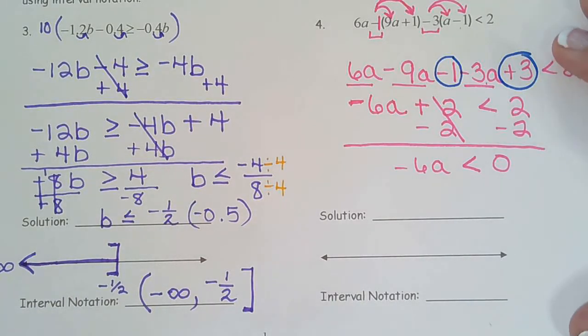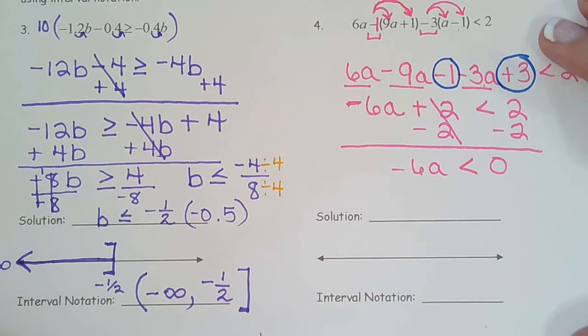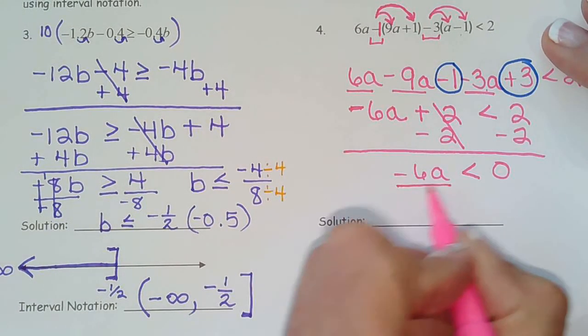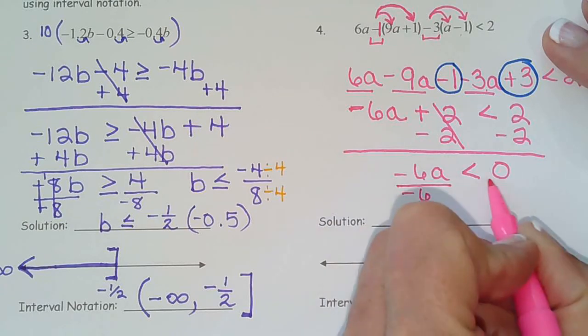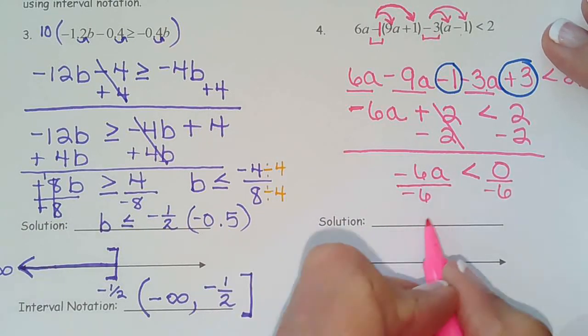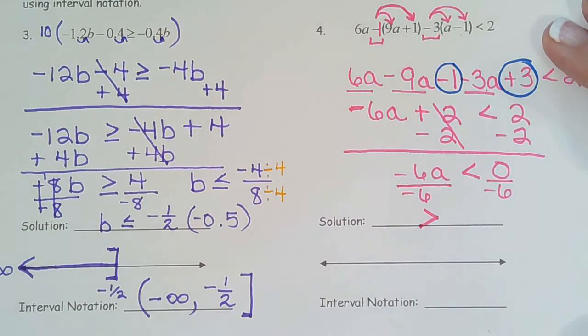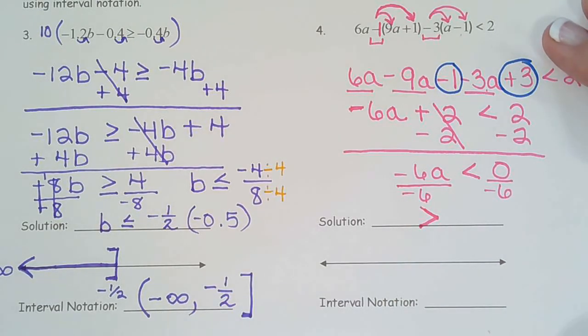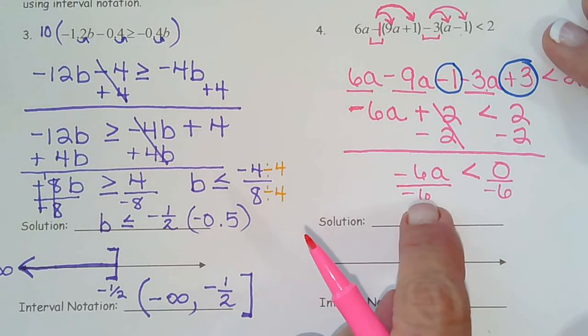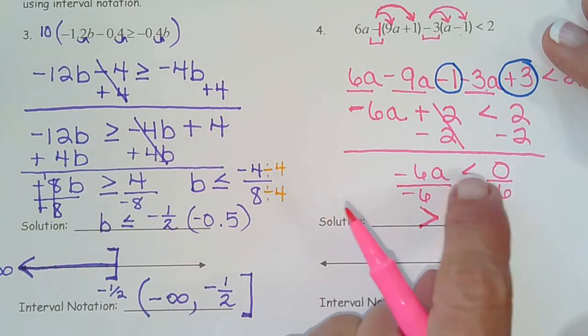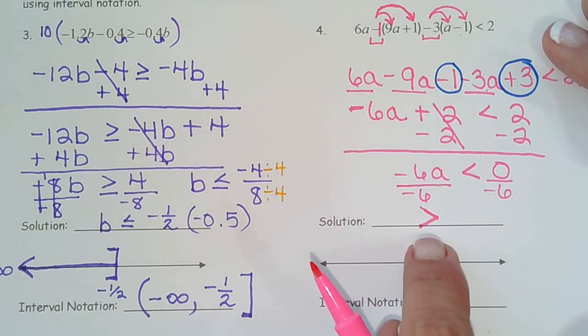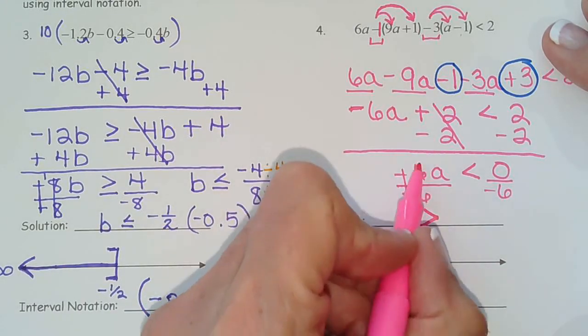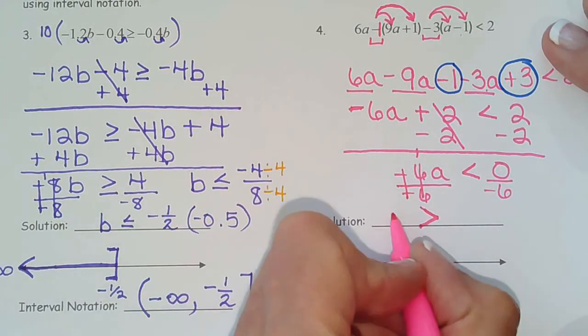And last but not least, we're dividing by, keyword, negative six. So I immediately jump down to the next step and flip my sign. It doesn't matter that I'm dividing into zero. All that matters is that I'm dividing by a negative. And the rule is anytime you divide or multiply by a negative, the symbol flips.